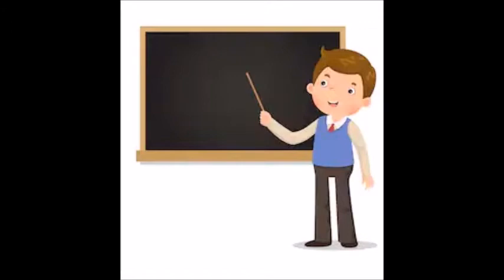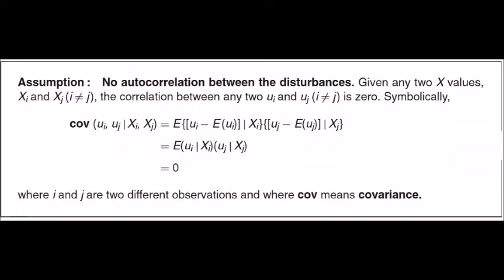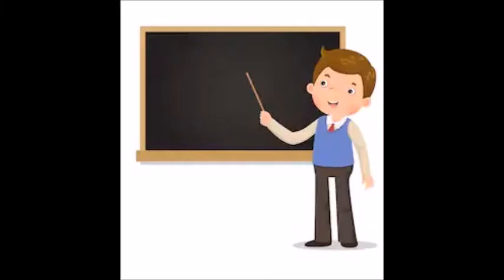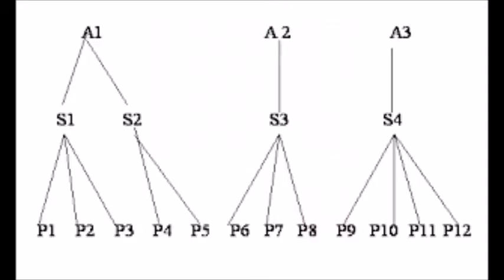The autocorrelation assumption states that there is no autocorrelation between the disturbances given any two x values x_i and x_j where i ≠ j. The correlation between any two disturbances u_i and u_j where i ≠ j is 0. Symbolically, the covariance of u_i and u_j given x_i and x_j equals 0. Nested data violate this assumption because there is autocorrelation between multiple levels.